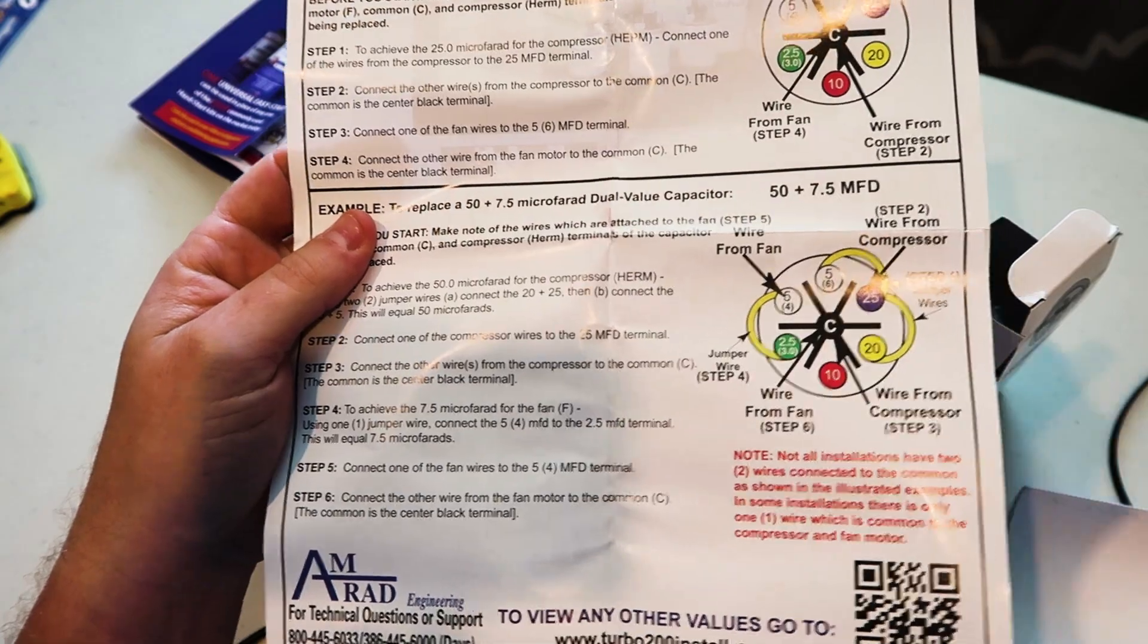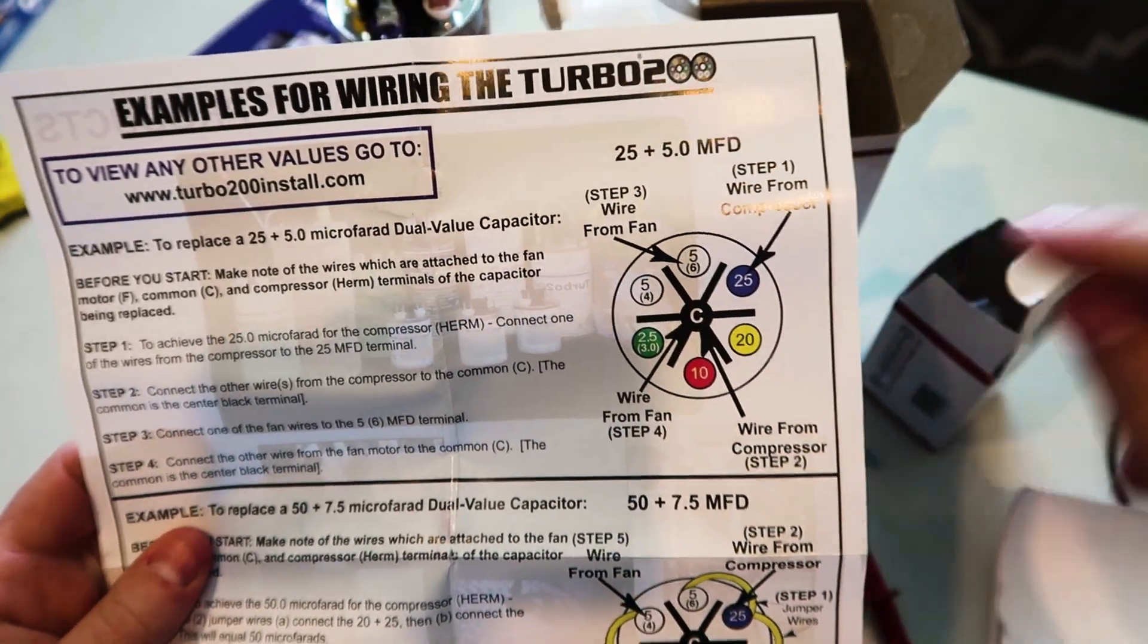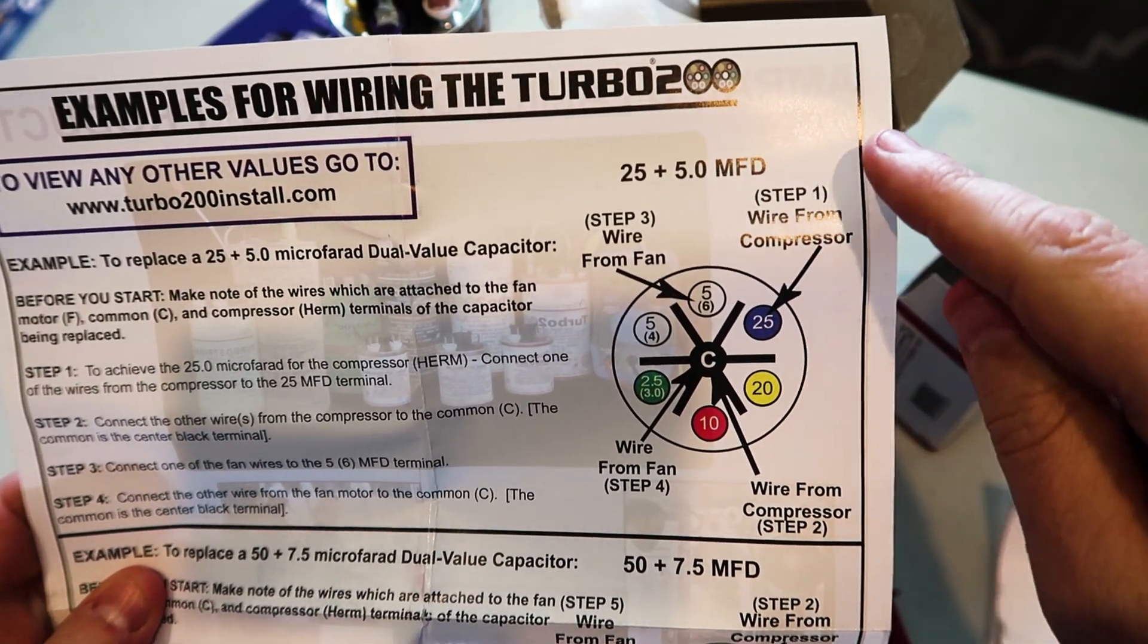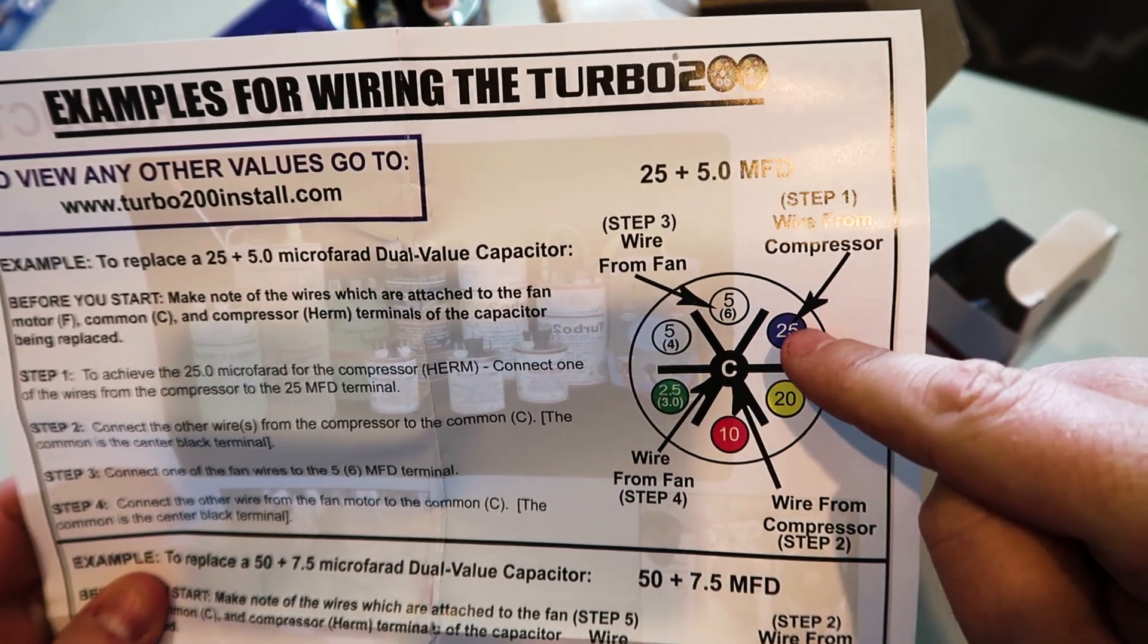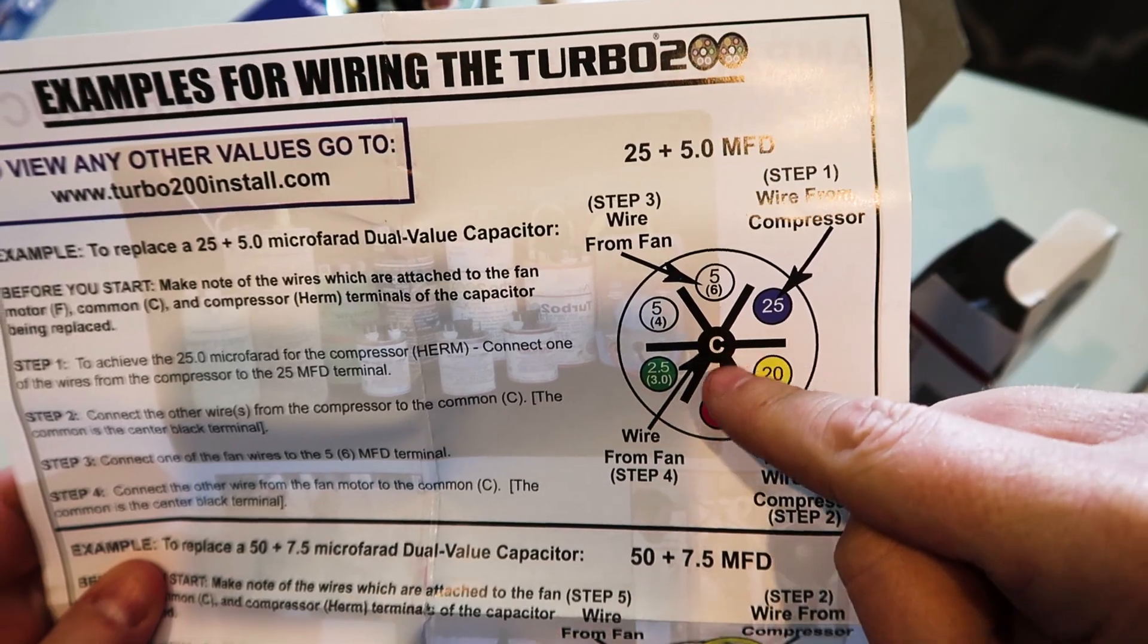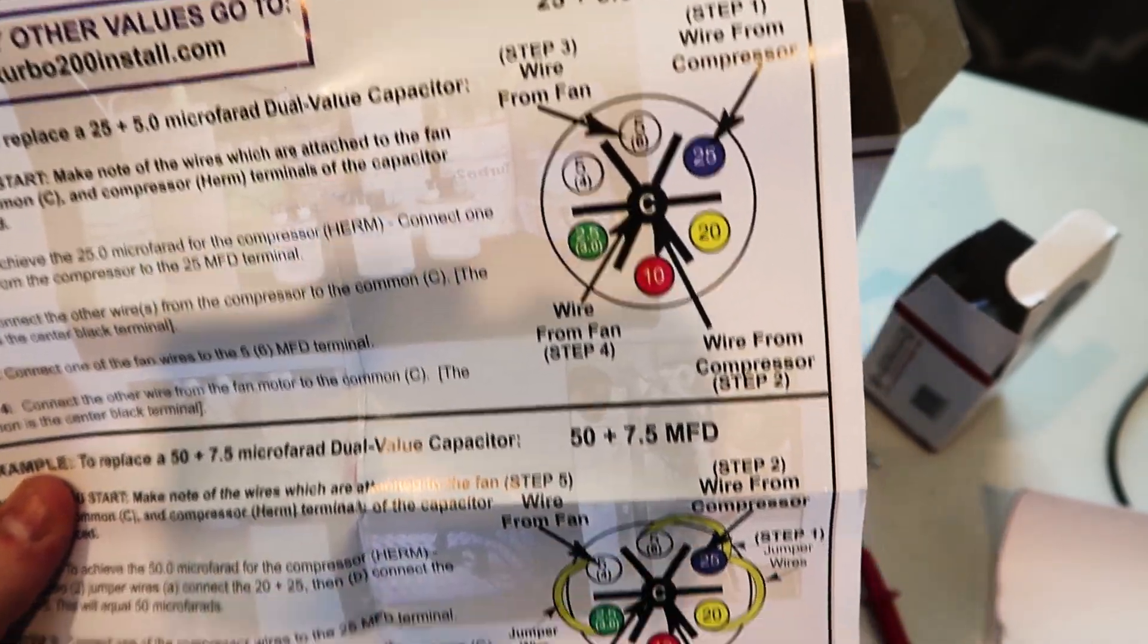So this shows you how to do this. And it's very, very simple. So as an example, if you wanted to do a 25 by 5 capacitor, well, you wire your fan here, wire your compressor here, and then wire your commons here, very simply. That would be like a typical capacitor.